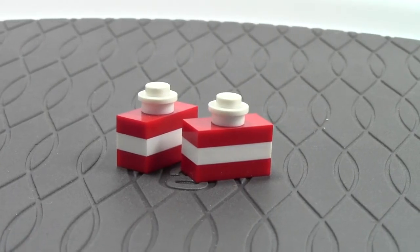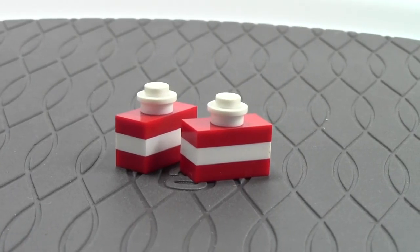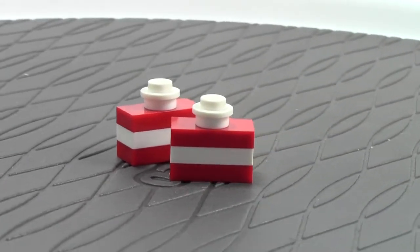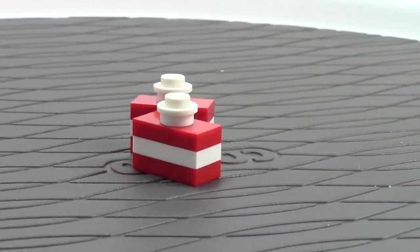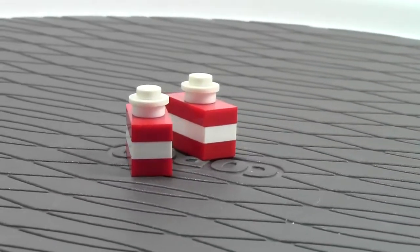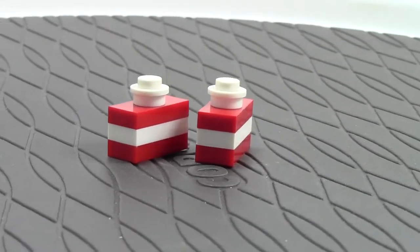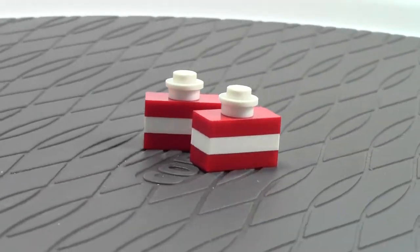This set comes with four presents. Two of them are the same, and there's three different ones overall. Here are the first two. They're these red and white ones, candy cane colors, with a little bow on top. Very cool.